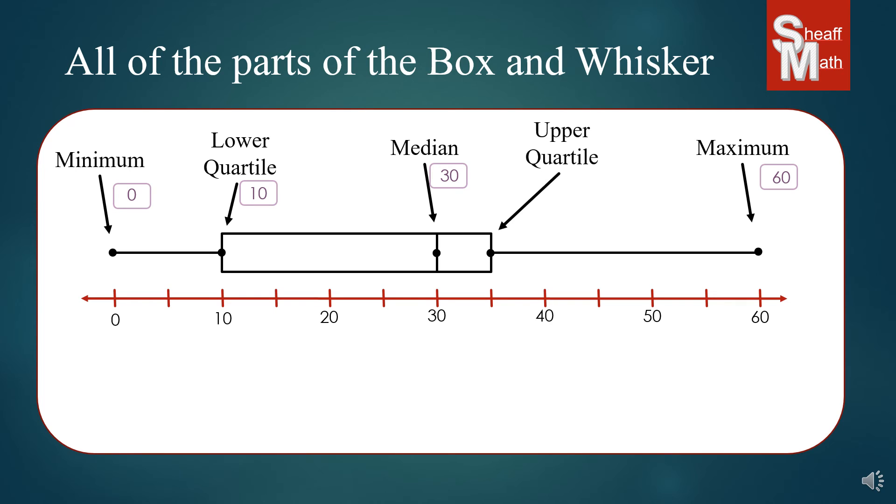And then the last dot is called the upper quartile. This for our example is 35. You're going to be asked to find what's the minimum of this box and whisker plot, what's the maximum, what's the median, what's the lower quartile. You need to know where they're located.